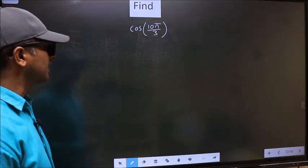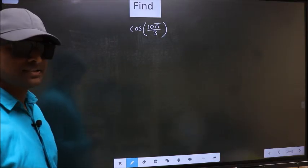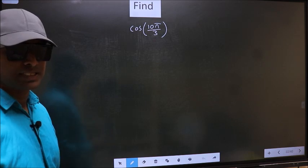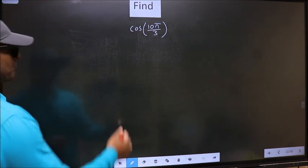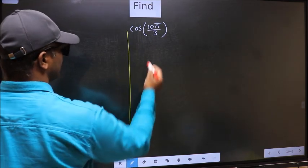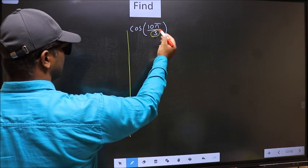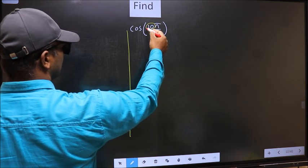Find cos 10π by 3. To find this, we should follow this method. See, in the denominator we have 3, in the numerator we have 10.